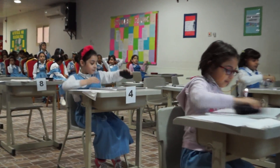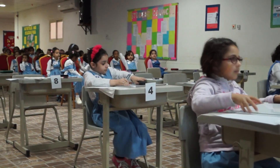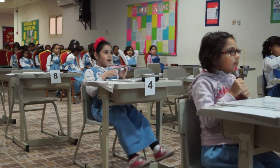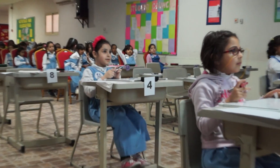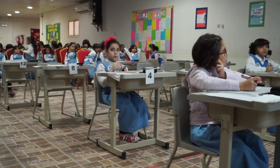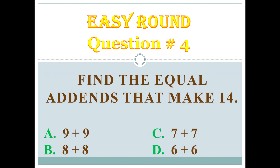Question number 3. How many 10s are in 15? Again, how many 10s are in 15? A: 9 plus 9. B: 8 plus 8. C: 7 plus 7. D: 6 plus 6.